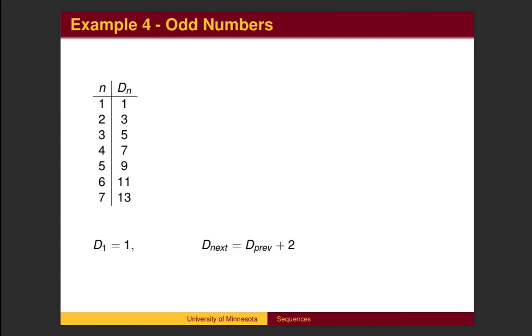Another way to define a sequence is with a recursive formula. Here are the positive odd numbers. We begin by specifying the first term. The first odd number is 1. We then specify how to get from one term to the next. To get to the next odd number, we add 2. This can also be done with subscripts. For any term d sub n, we find the next term d sub n plus 1 by adding 2.